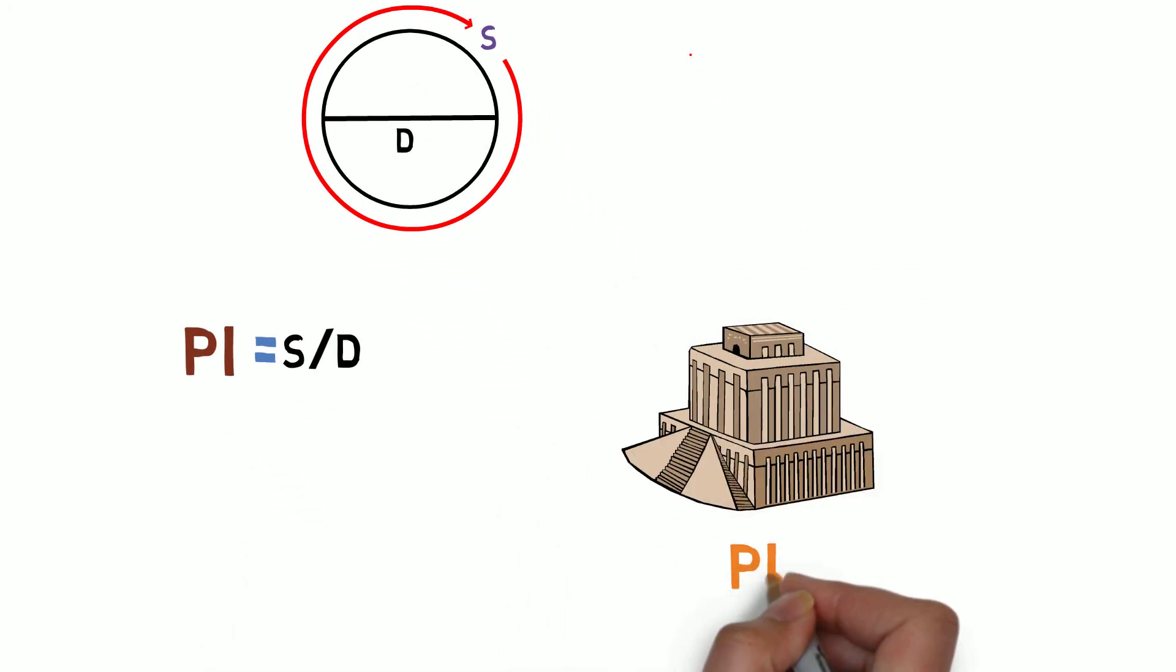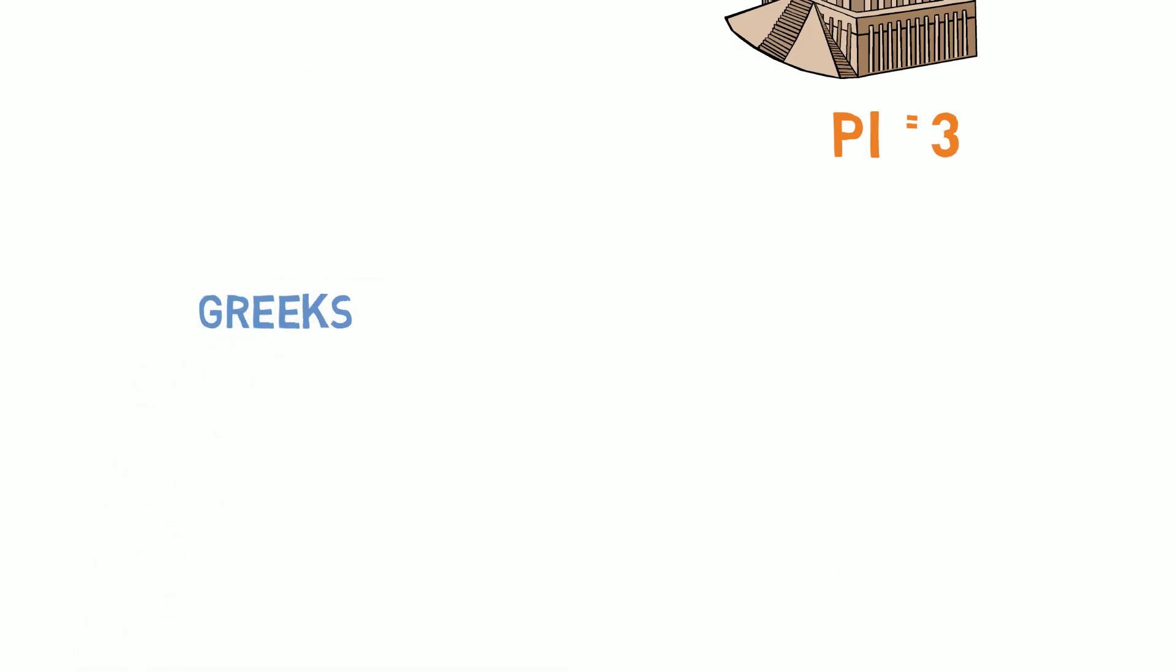In the Babylonians time the pi value was 3 through which they performed many things. Later it was redefined by the Greeks and Archimedes was the first mathematician who for the first time determined the theoretical calculation of pi.